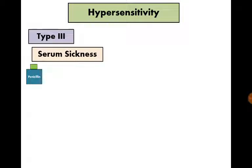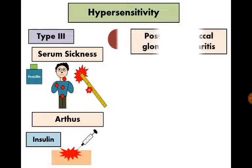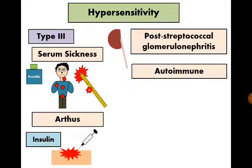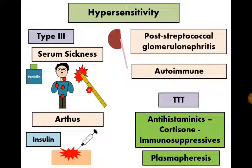Examples of Type 3 hypersensitivity reactions include serum sickness precipitated by some drugs like penicillin, Arthus reaction caused in the part of skin that is injected with insulin regularly, post-streptococcal glomerulonephritis, and autoimmunity. Treatment includes antihistamines, cortisone, immunosuppressives, and plasmapheresis to clear immune complexes from the circulation.